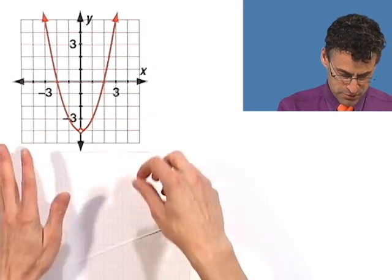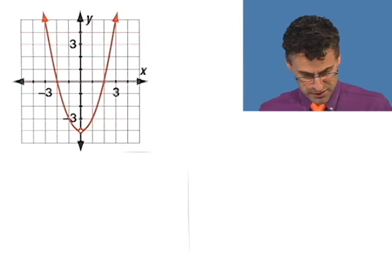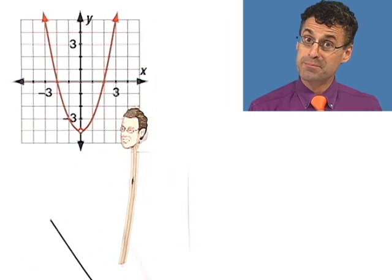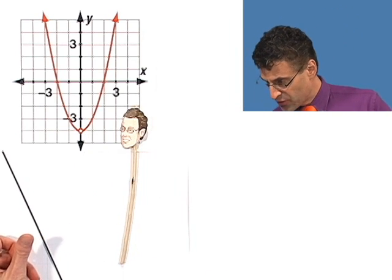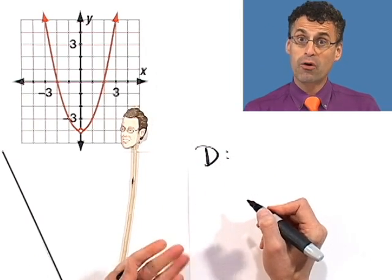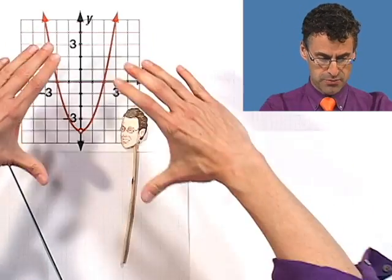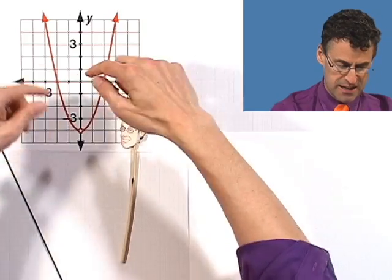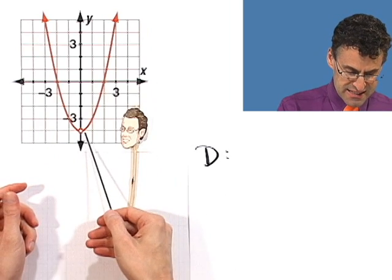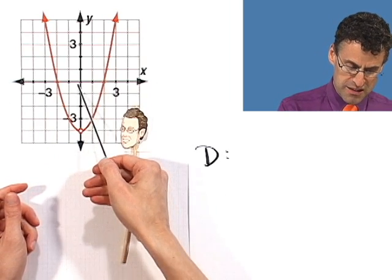Let's now try some really fast examples to get a sense of how to look at these. Here's a very interesting graph — it kind of looks like a parabola, but if you look really closely, you'll see there's actually a hole right there. So the domain and the range are both going to be slightly different than the last example. The domain is all the allowable x values — imagine squishing the red graph down to the x-axis. Everything will get hit with red except at zero.